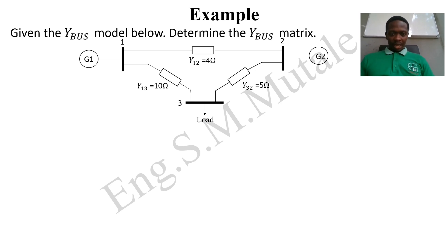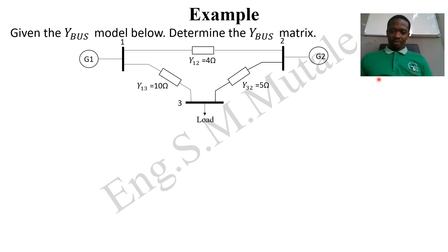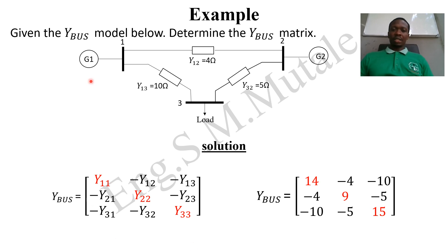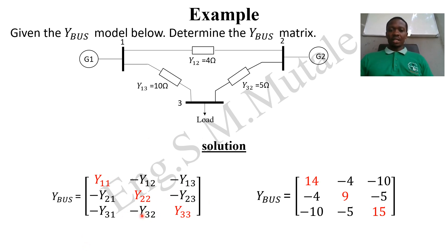As a worked example: given the Y-bus model with three buses, determine the Y-bus matrix. We have admittances of 4 ohms between bus one and bus two, 10 ohms between bus one and bus three, and 5 ohms between bus two and bus three. Since there are three buses, the matrix is three-by-three. The off-diagonal elements will be negative.